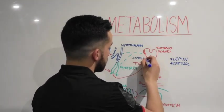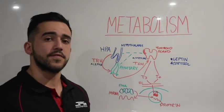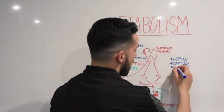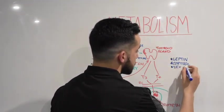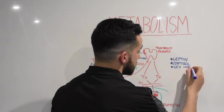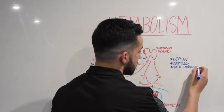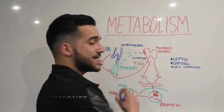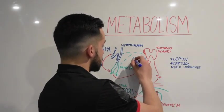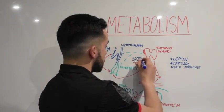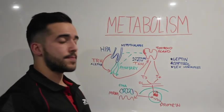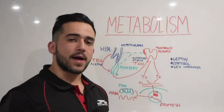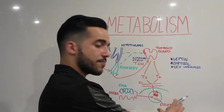So cortisol impacts TSH sensitivity. Other hormones which are also important are sex steroids — sex hormones. A reduction in testosterone can also lead to TSH sensitivity being reduced, again inhibiting T3 and T4 release.